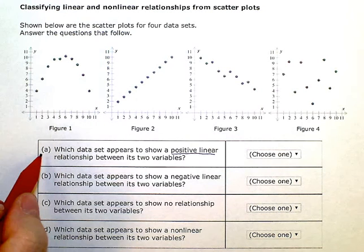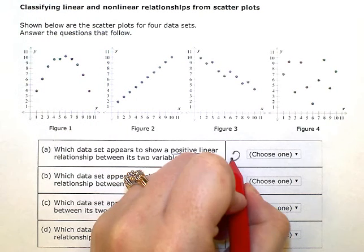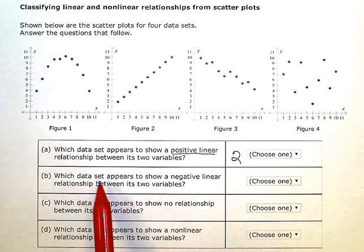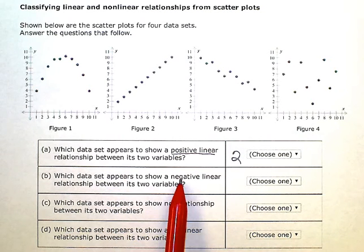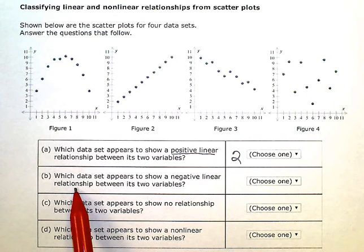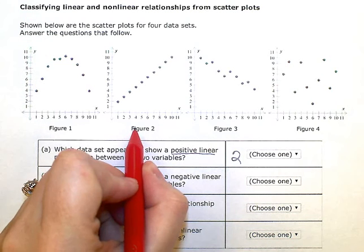So figure two would be the answer there. Which data set appears to show a negative linear relationship? Okay, so we use this one. It's out.